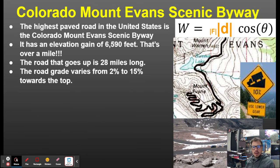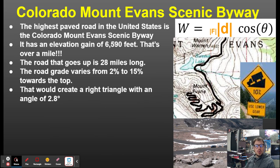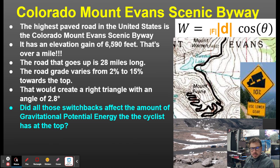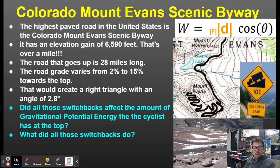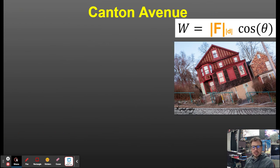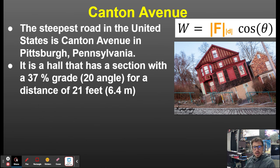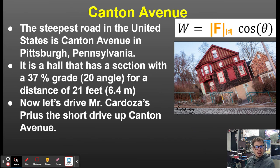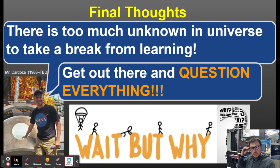If we look at the Colorado Evans Scenic Byway — the highest paved road in America — do all the switchbacks affect the amount of gravitational potential energy that cyclist has? No, at the end of the day you're going to be at the top of that mountain with the same amount of gravitational potential energy — it's the same amount of work. What all those switchbacks do is increase the displacement over which that force is applied, so it lowers the force required. That's why you can drive up to the top of Mount Evans. Looking at Canton Avenue, the steepest road in America, the very small displacement going straight up that hill means you apply a larger force than if there were switchbacks going back and forth. There is just too much unknown in the universe to take a break from learning — get out there and question everything.